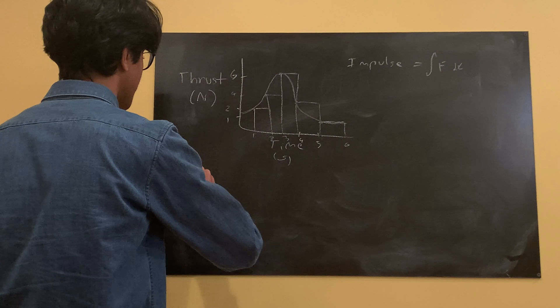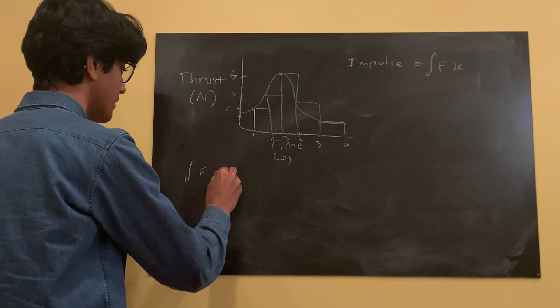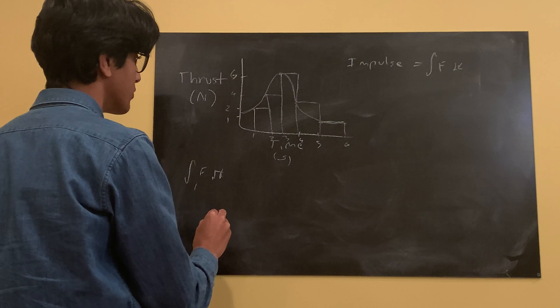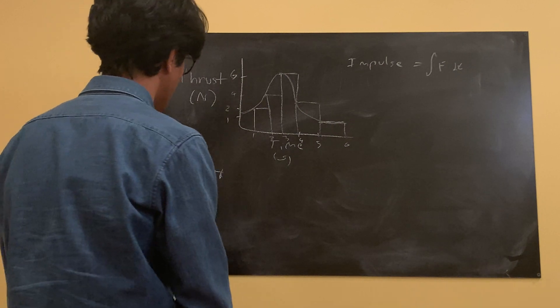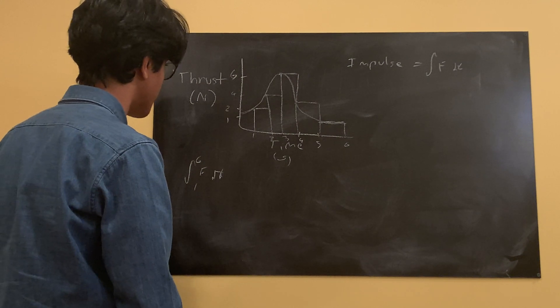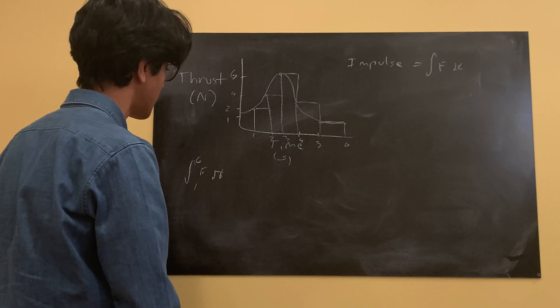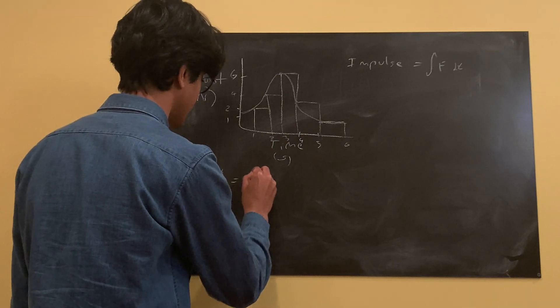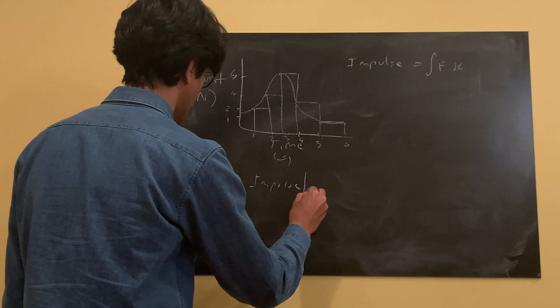Let's say we want to find the integral of f dt from one second to six seconds. So to find that impulse from one second to six seconds, it's equal to our impulse. Just again, to restate that, from one to six.